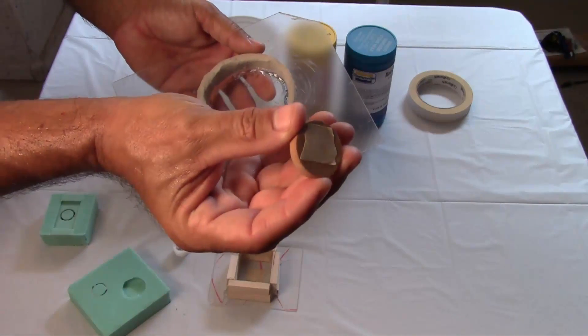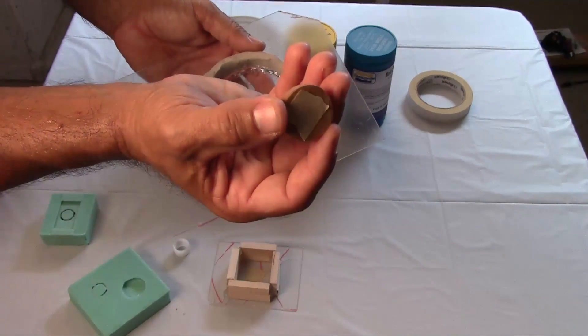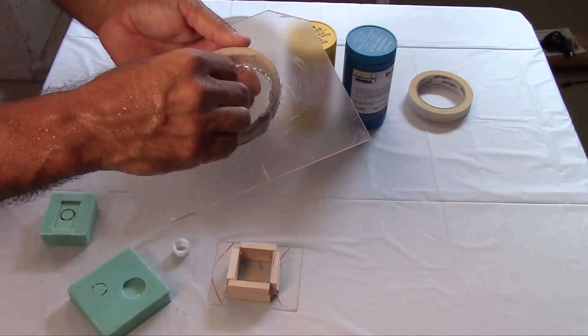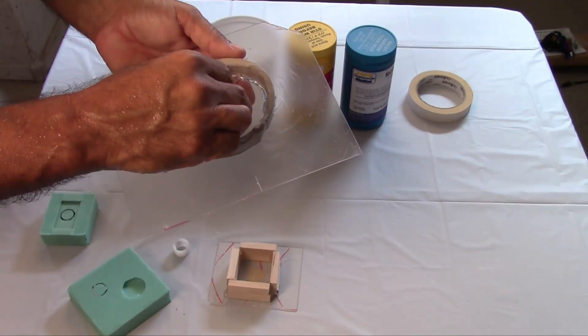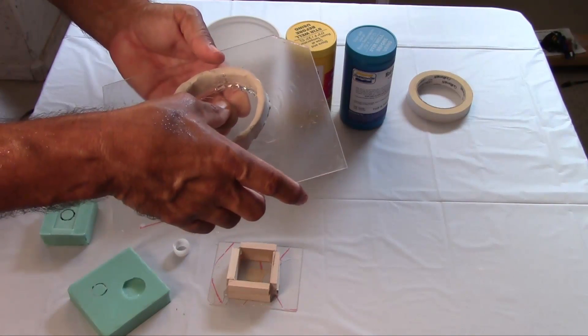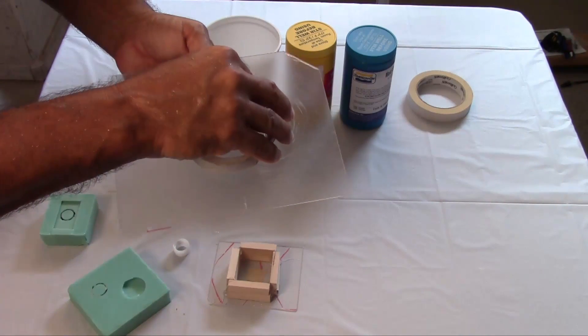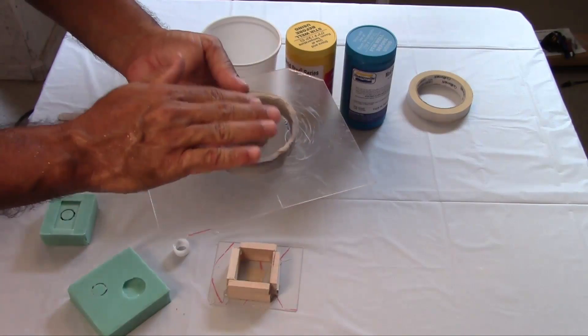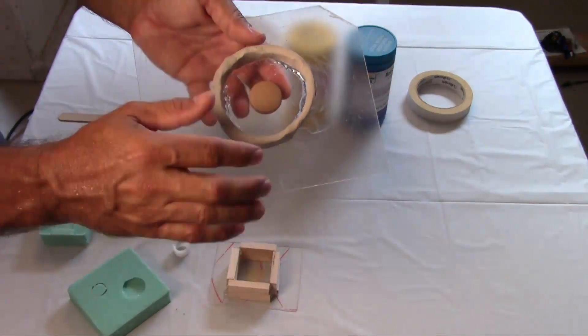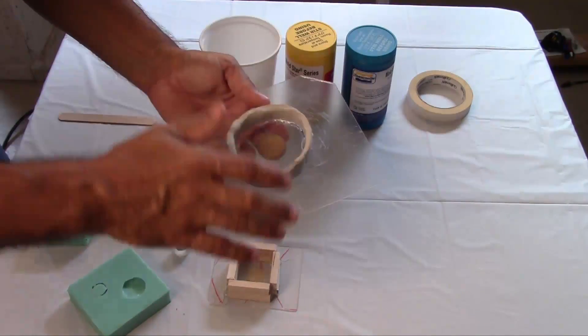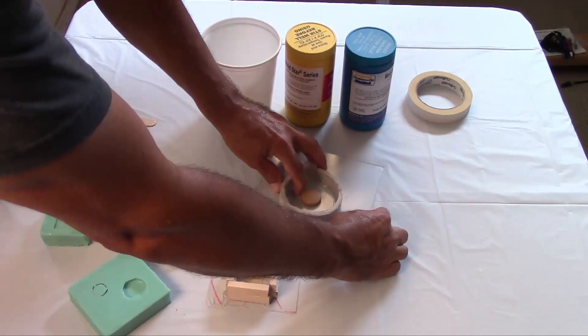I have some two-sided, double-sided tape on the bottom. Because if I don't do that, the part's going to want to float when I begin to pour the molding material in. So what will happen is rather than staying down in the bottom, that part will want to rise to the top and that will cause us problems.